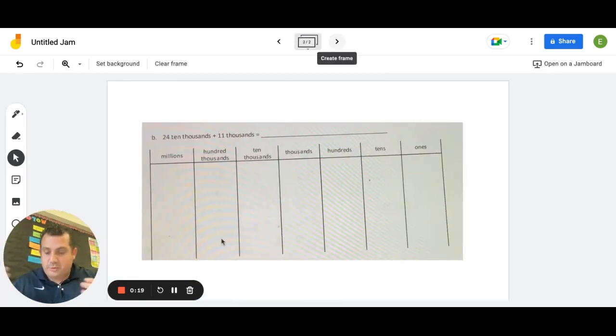I'm just going to give you one example. We did a bunch of these in class, but I just want to walk you through one of these examples. So you can see here, we have 24 10,000s plus 11,000s. So what kind of form is this written in? Is this word form, standard form, or expanded form? Or is this unit form?